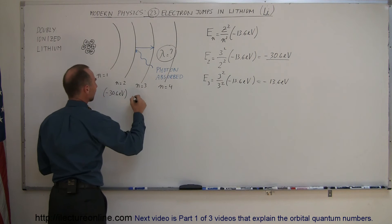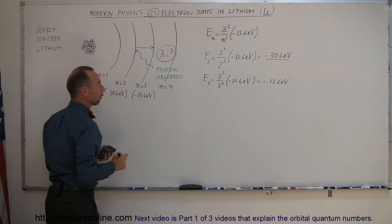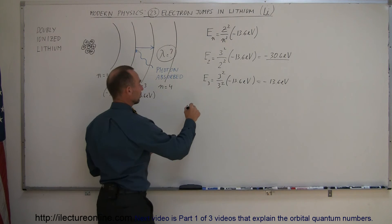So, the energy of the third level in lithium would be minus 13.6 electron volts. The difference between the two, the delta E,